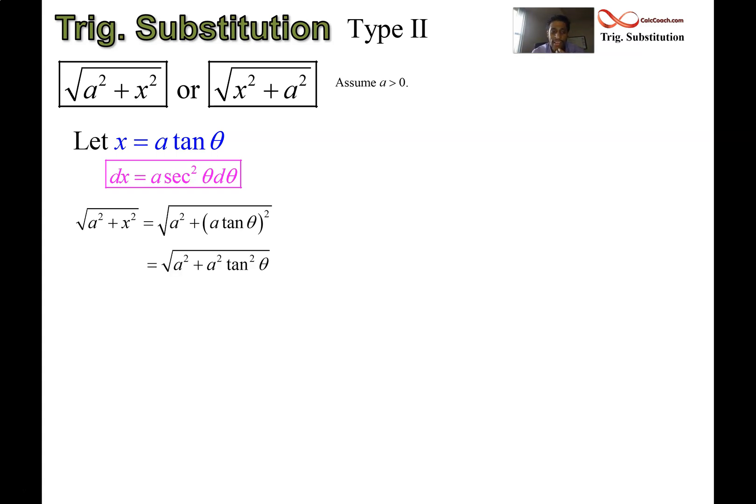So we have a² plus x, which is now squared. Square the a and square the tan. Factor out the a. This is why, right here. After factoring out the a, you are left with 1 + tan² θ. And that's a perfect square. That is sec² θ.